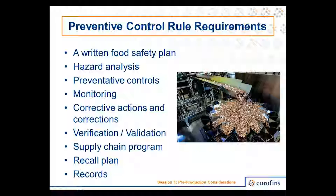If your supplier is addressing a hazard on your behalf and you do not address that hazard in your process — for example, you may be receiving corn and you realize in your hazard analysis that aflatoxin is a concern, and that supplier is the only one who deals with that aflatoxin — you'll have to build a supplier preventive control for that corn product. Anytime you have a preventive control defined in your food safety plan, you must include a documented recall process. Records are required for each of those activities to show the FDA when they come in to verify that those controls are being followed.